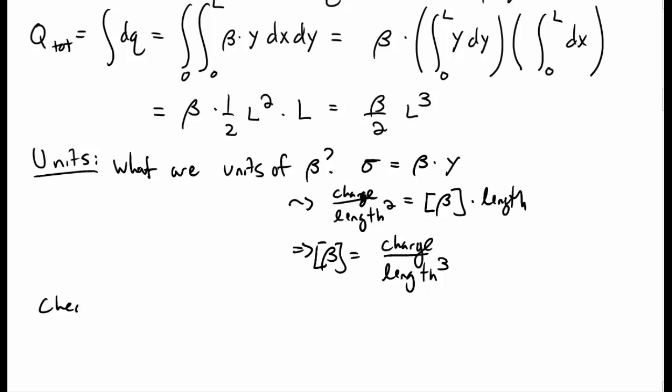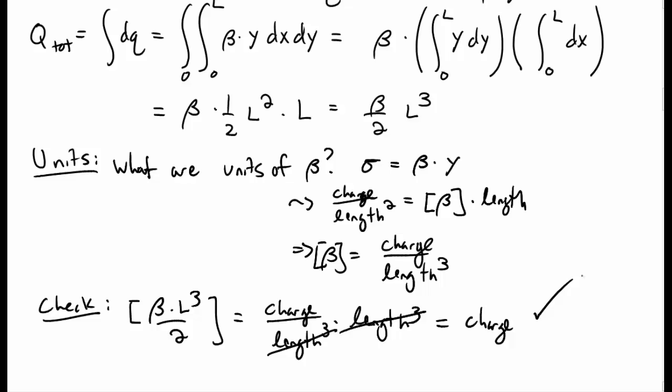Okay, good. So, now we can use this to check our result. Does our result have the units of charge as it should? Well, we have beta l cubed over 2. So, beta has units of charge per length cubed. l cubed, obviously, has length cubed. And so, we're just left over with units of charge, as we expect. Which is good.